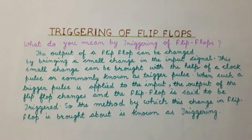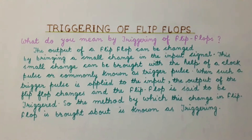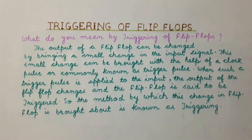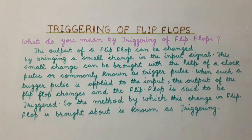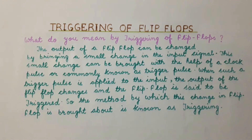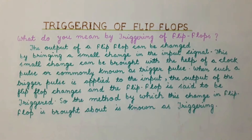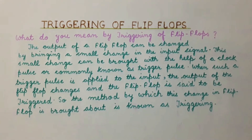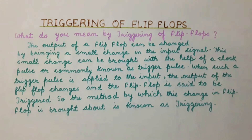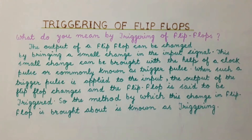Hello everyone. In this presentation we will discuss the triggering of flip-flops. The output of a flip-flop can be changed by bringing a small change in the input signal. This small change can be brought with the help of a clock pulse, commonly known as a trigger pulse. When such a trigger pulse is applied to the input, the output of the flip-flop changes and the flip-flop is said to be triggered. The method by which this change is brought about is known as triggering.